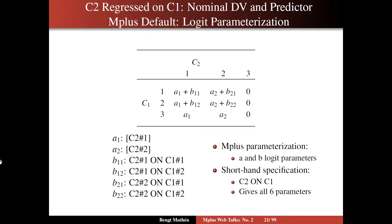On slide 21, we're going to take a look at another kind of logistic regression. We will consider the regression of C2 on C1 — that is, the latent class variable at time 2 related to the latent class variable at time 1. Now this is going to be a nominal dependent variable; C2 is nominal, and the predictor, the independent variable, is also nominal: C1. But we're still going to work within the logit regression framework and the logit parameterization.